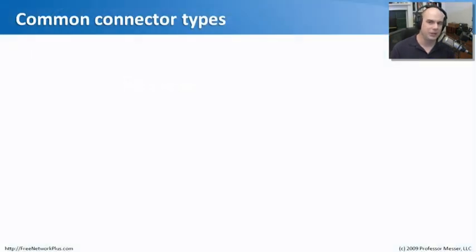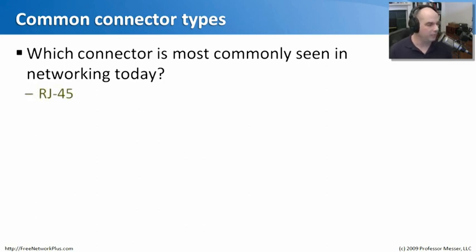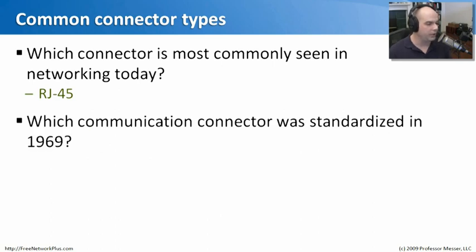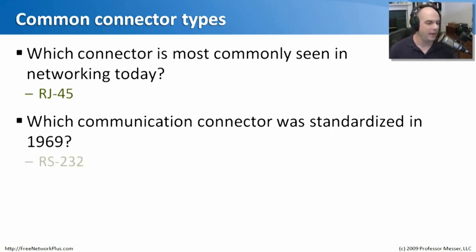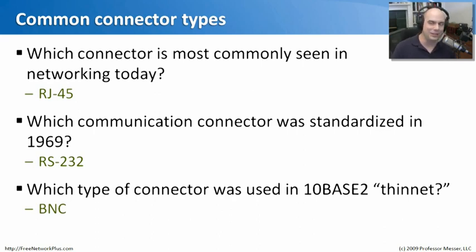Let's review what we've covered about connection types. Which connector is most commonly seen in networking today? That's the RJ45 — seen in home offices, small, medium, and enterprise networks around the world. Which communication connector was standardized in 1969? That's RS232 — a standard that works perfectly well today as it did back then. Which connector type was used in 10Base2 thinnet? That's BNC — the standardized connection for those thin 10Base2 Ethernet connections. If you ever work with 10Base2, you'll be using BNC connectors on those devices.